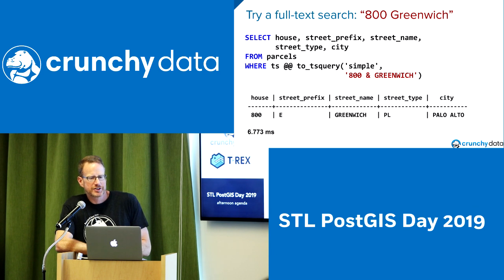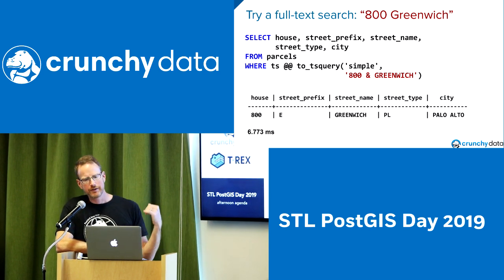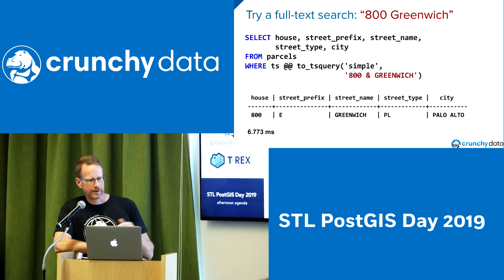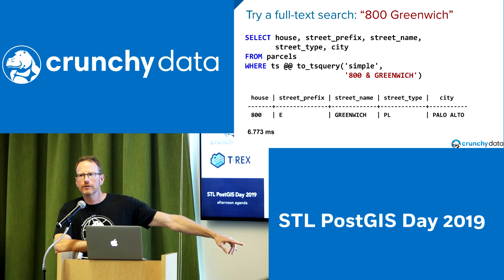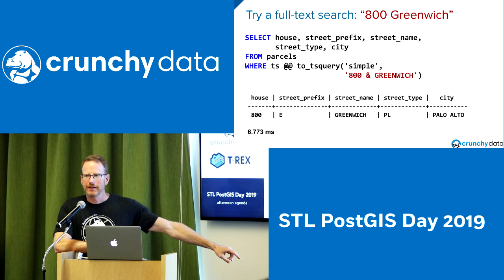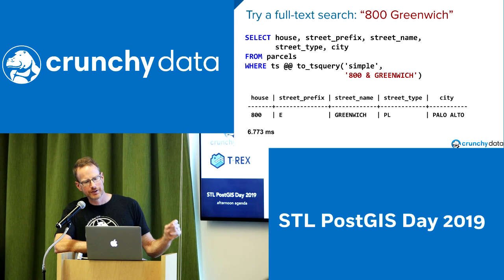A full text search — if I type '800 Greenwich' and convert to TS query — says I want house number 800 and street name Greenwich, and can run that against 500,000 records returning a candidate in six milliseconds. Unlike a LIKE operator for partial string matching, this doesn't care about the order of things or the casing. You can include some or all of the tokens making up the object and still get a result back in six milliseconds.